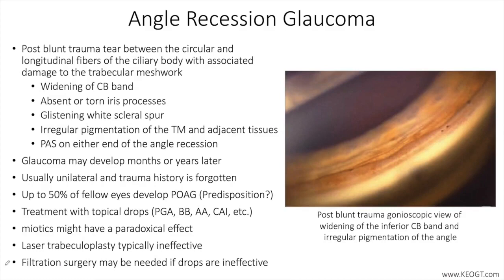Angle recession of the anterior chamber angle occurs secondary to concussive ocular trauma. It is associated with glaucoma in a minority of patients, and the development of glaucoma may occur shortly after the trauma or many decades later. It is believed that over half of the eyes that experience blunt or concussive force will develop some degree of angle recession, and that presence of a traumatic hyphema will increase the likelihood of co-existent angle recession. Increased angle pigmentation and lens trauma may also be linked with higher likelihood to develop glaucoma.